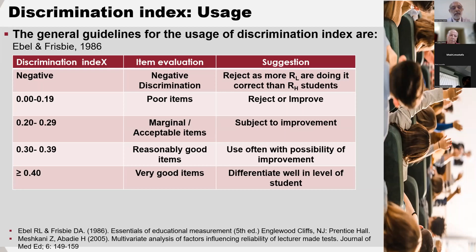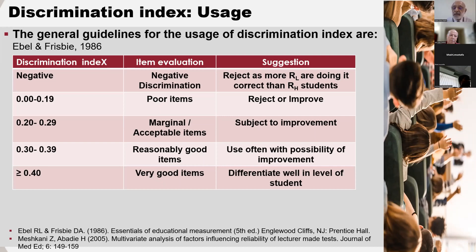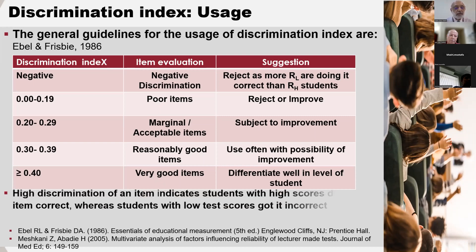The usefulness of this is that by looking at the difficulty index and discrimination index, we can choose good questions from the examination and place them in a question bank. At the same time, we can identify questions which need improvement and work on those for future use. High discrimination of an item indicates that students with high scores answered the item correctly whereas students with low scores got it incorrect. If it is low or negative discrimination, then it is vice versa.